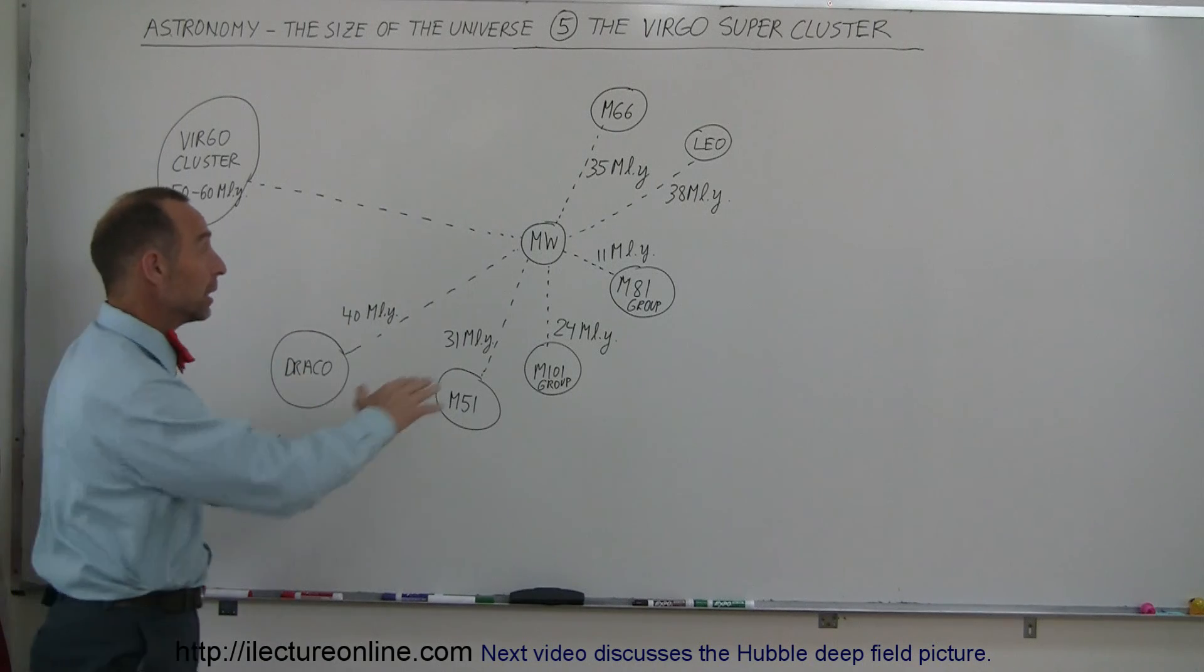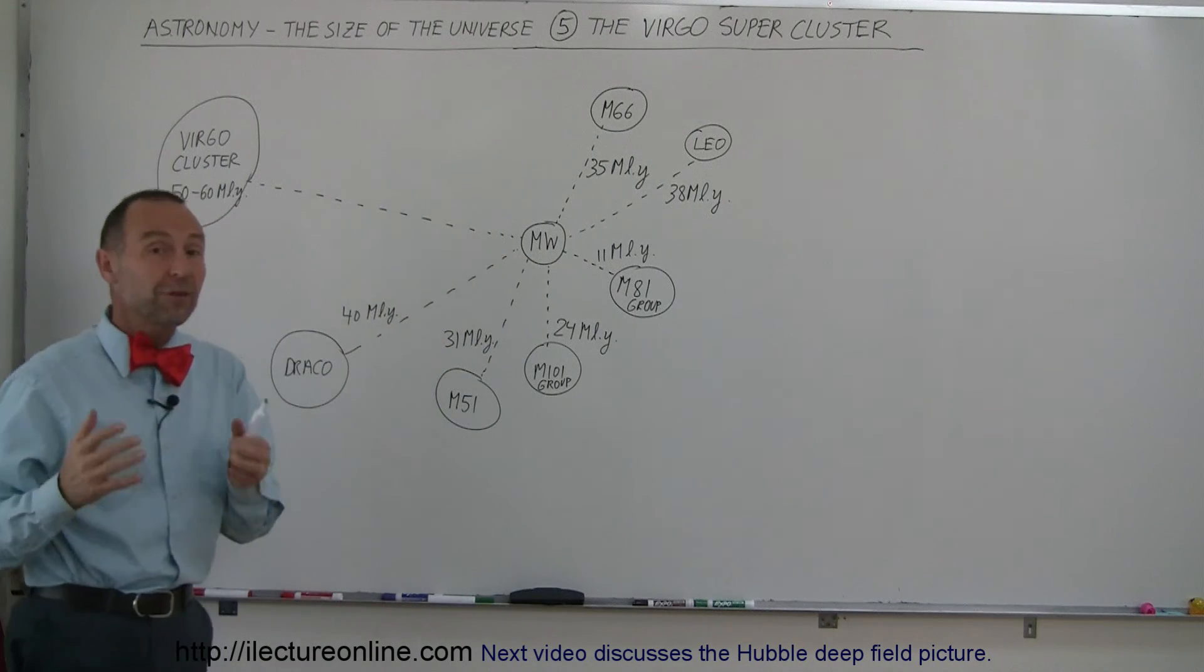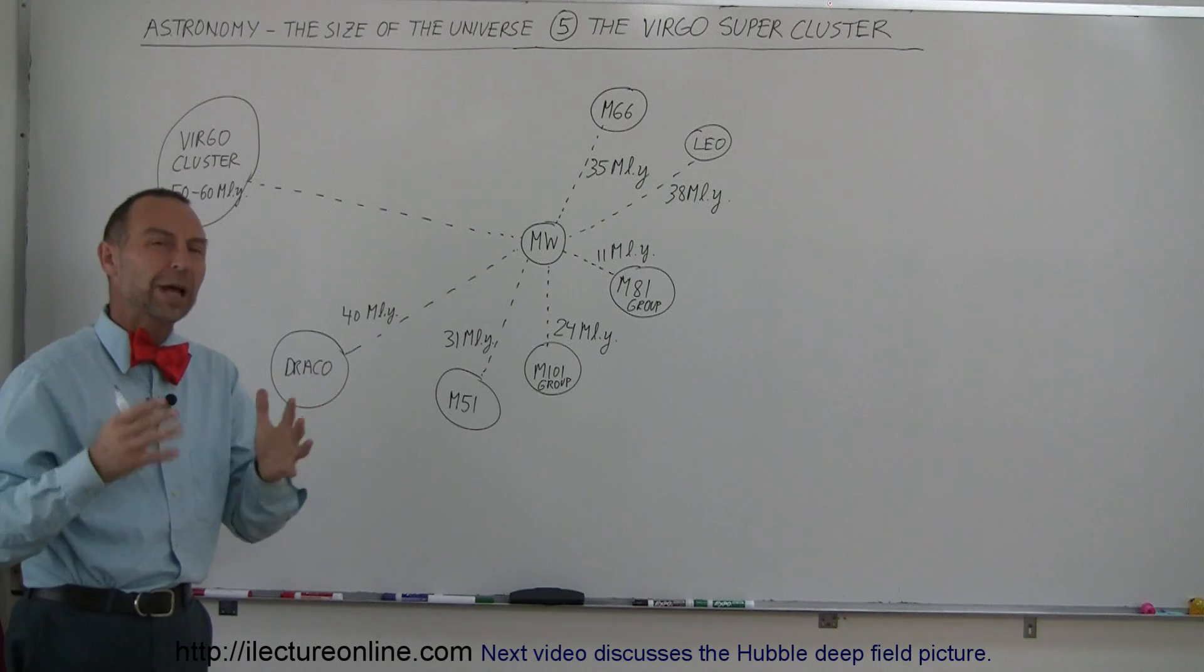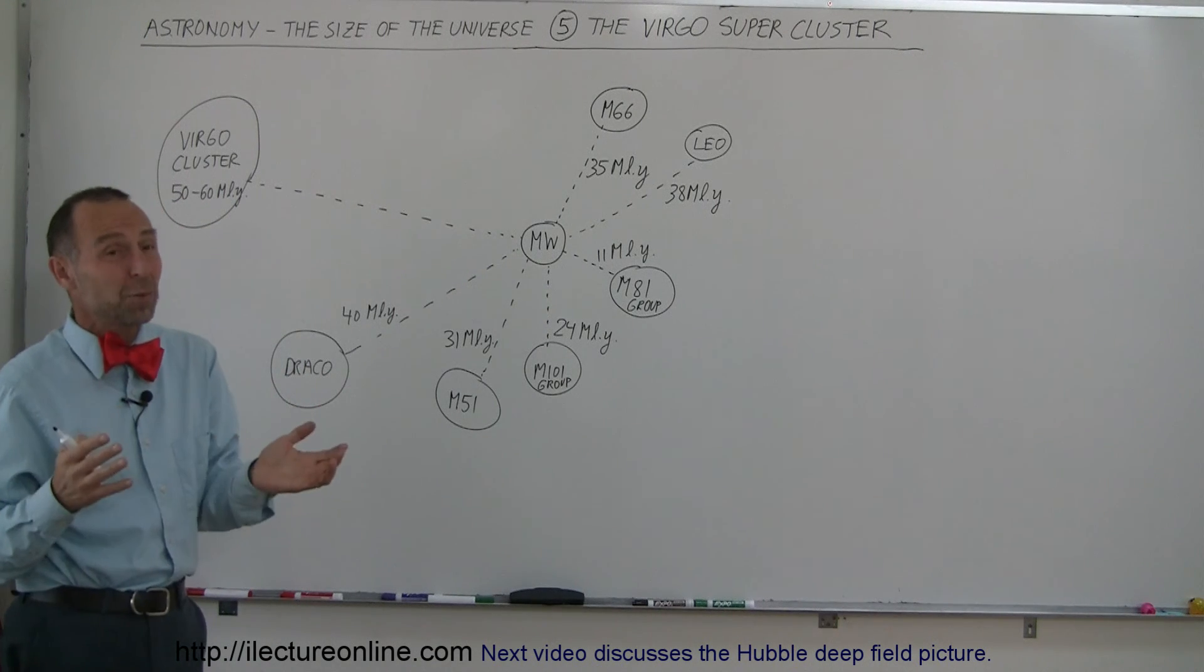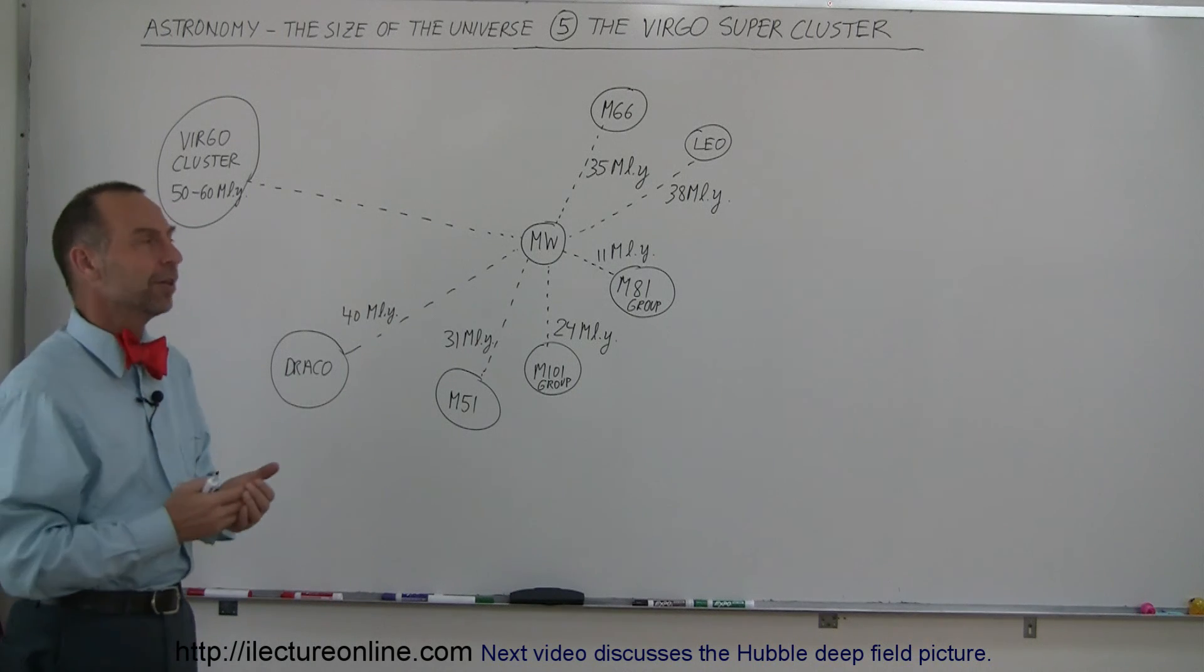And within that group, called the Milky Way group, there's 54 galaxies, three big ones, the other ones are rather small, but when we say rather small, each of those small galaxies still has billions of stars in them.